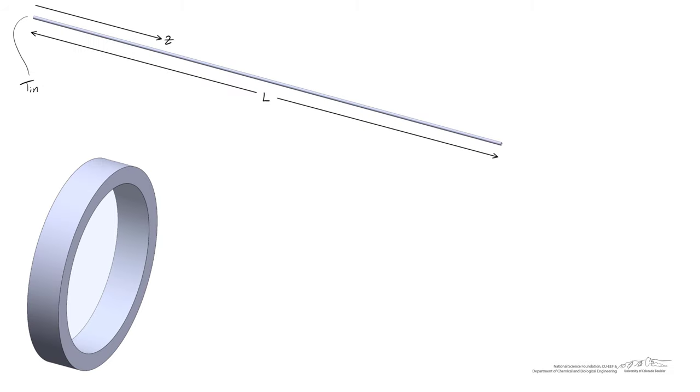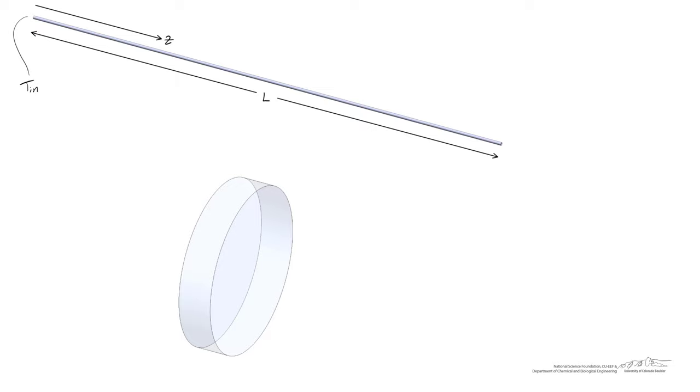To go about doing this, we're going to write an energy balance around a differential slice of our pipe. And I should mention that it's not actually the pipe that we're going to do a differential balance on, it's the water within that differential slice. So I'm going to remove the pipe walls itself just to avoid confusion. We're just going to look at the water.